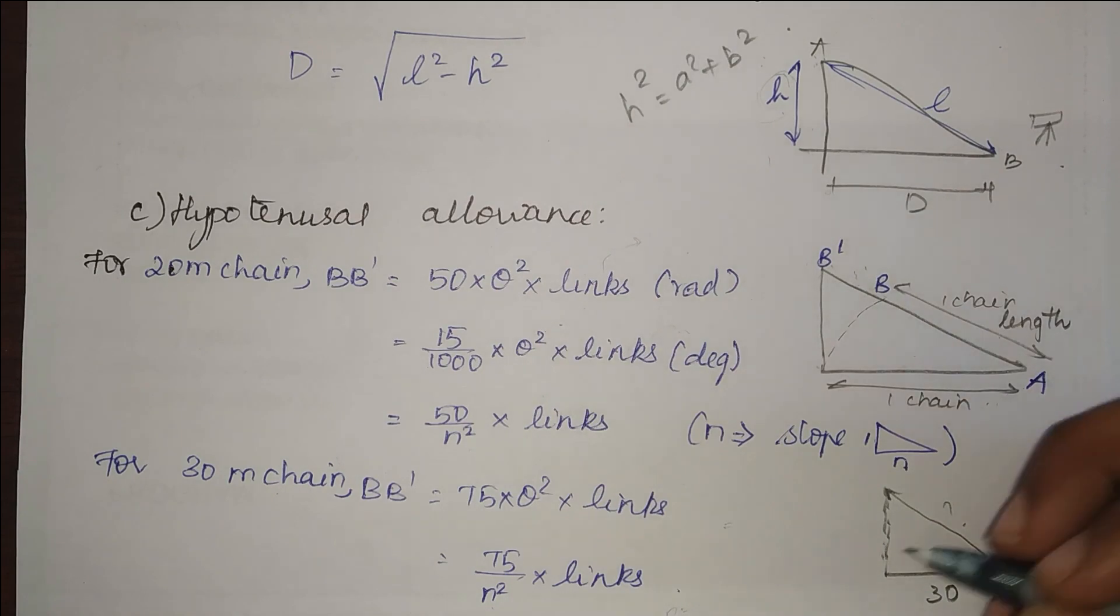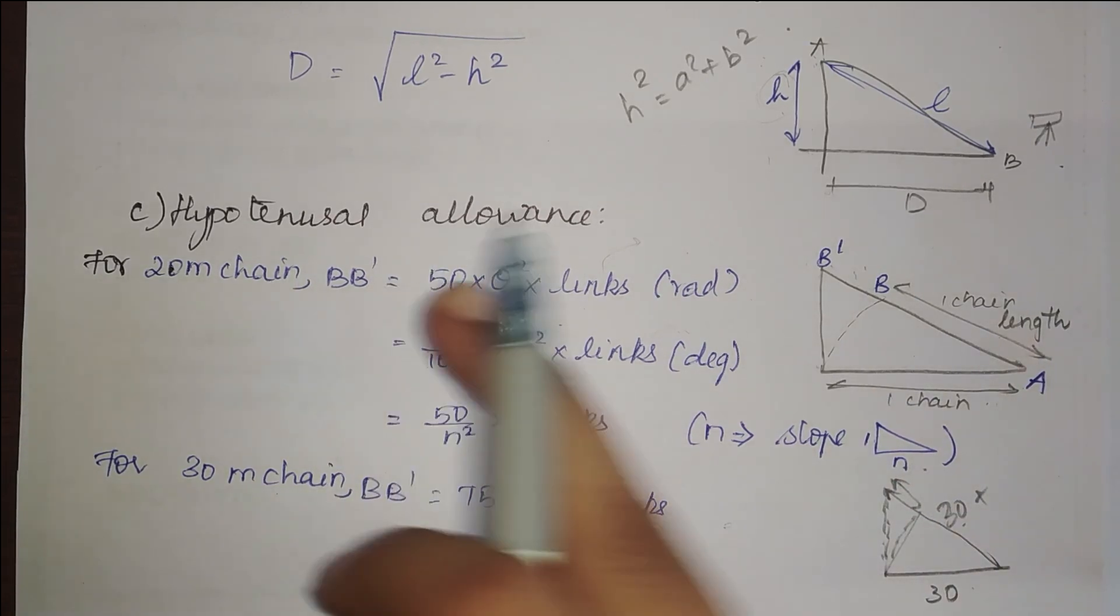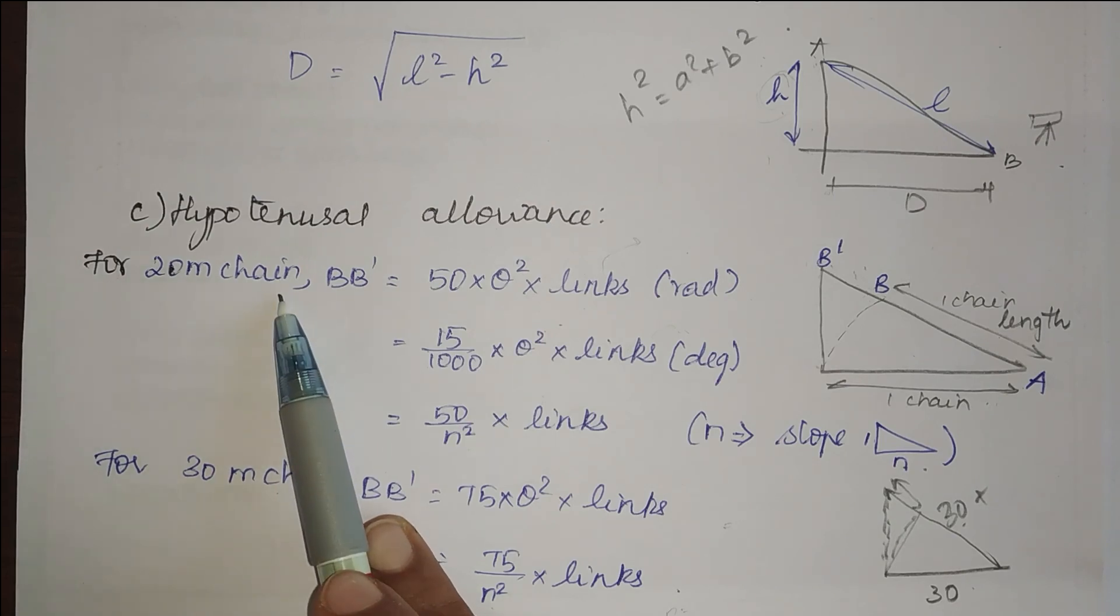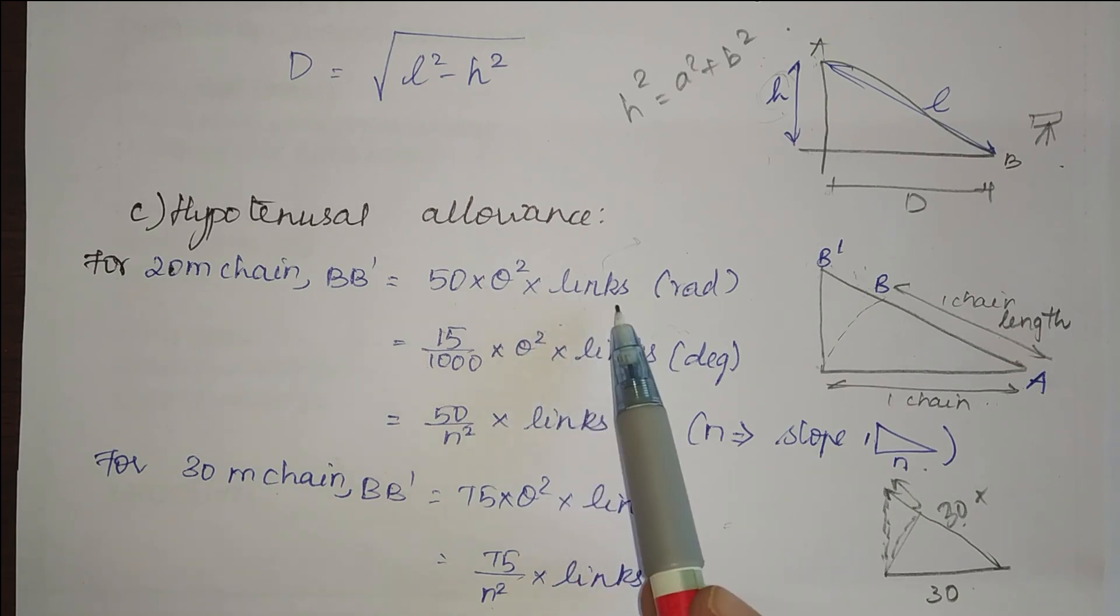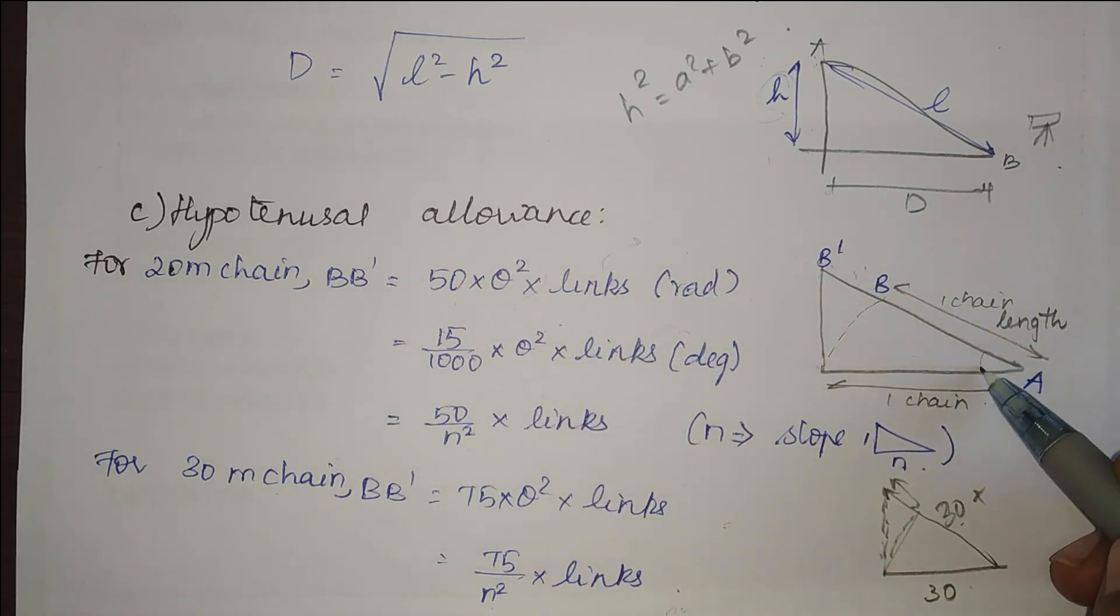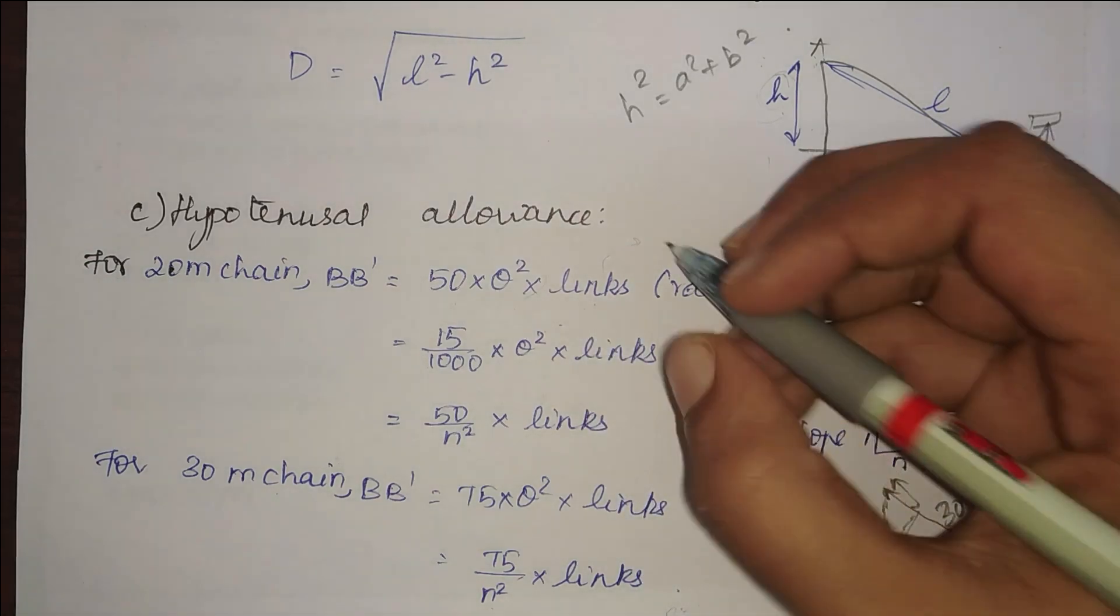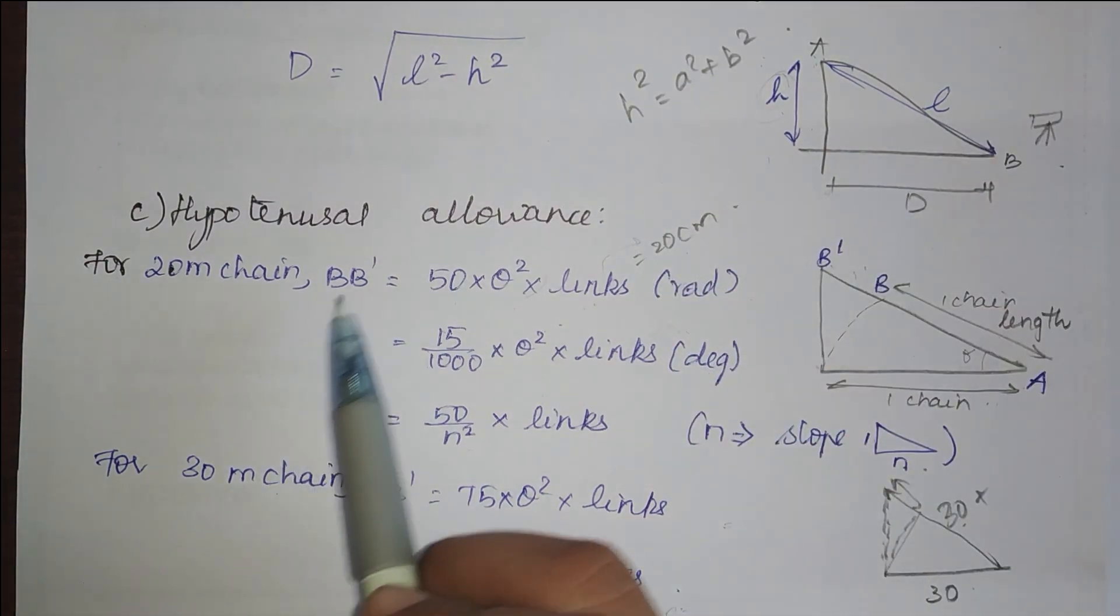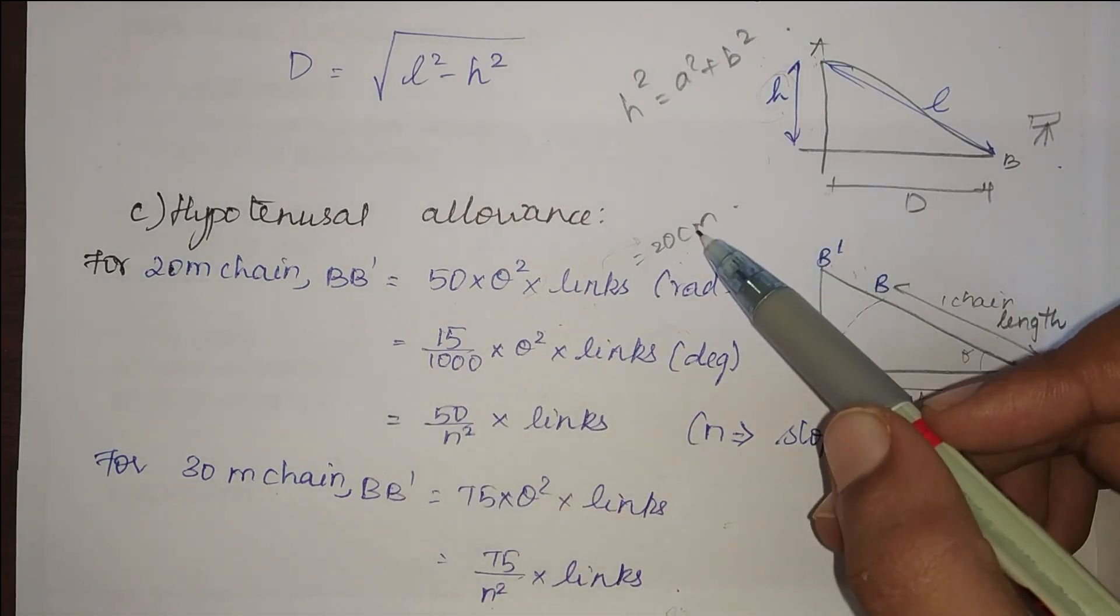We have formula for this distance. If it is going to be a 30 meter chain or 20 meter chain, our hypotenusal allowance is 50 into theta squared into links, if the theta is in radians. Theta is our angle and the links is, we know that for every chain the link is equal to 20 centimeter. If we need the answer in meter it will be 0.2 meters, if it is in centimeter we can directly substitute it as 20 centimeter.